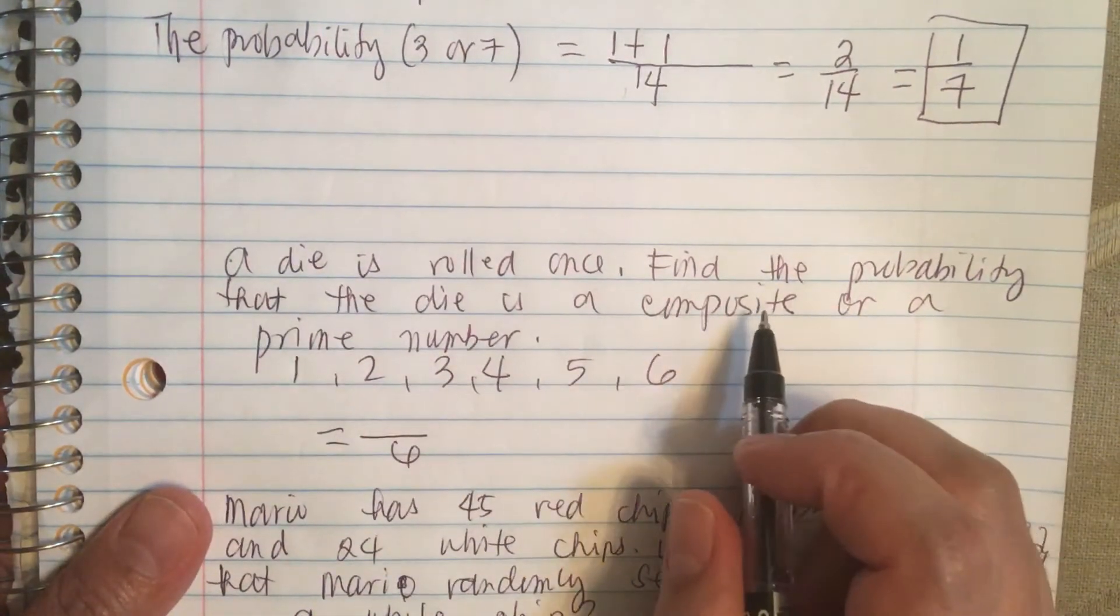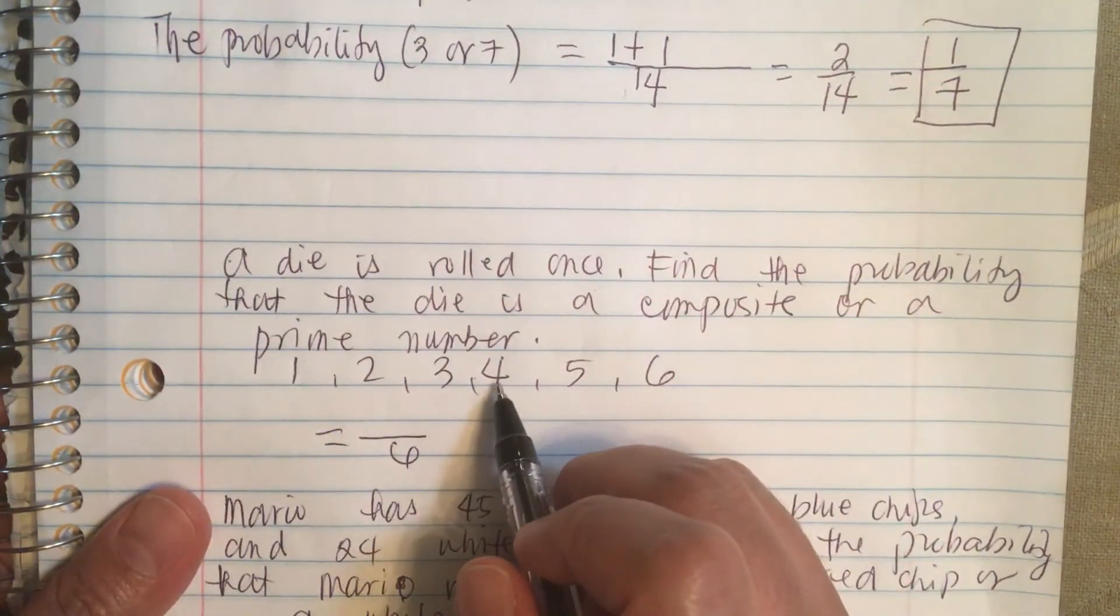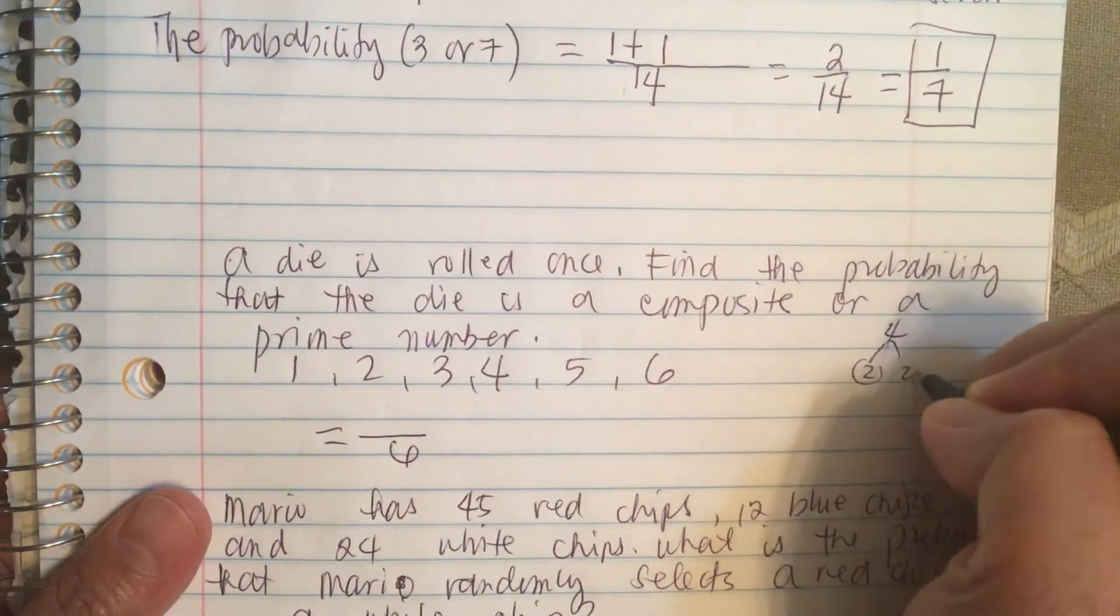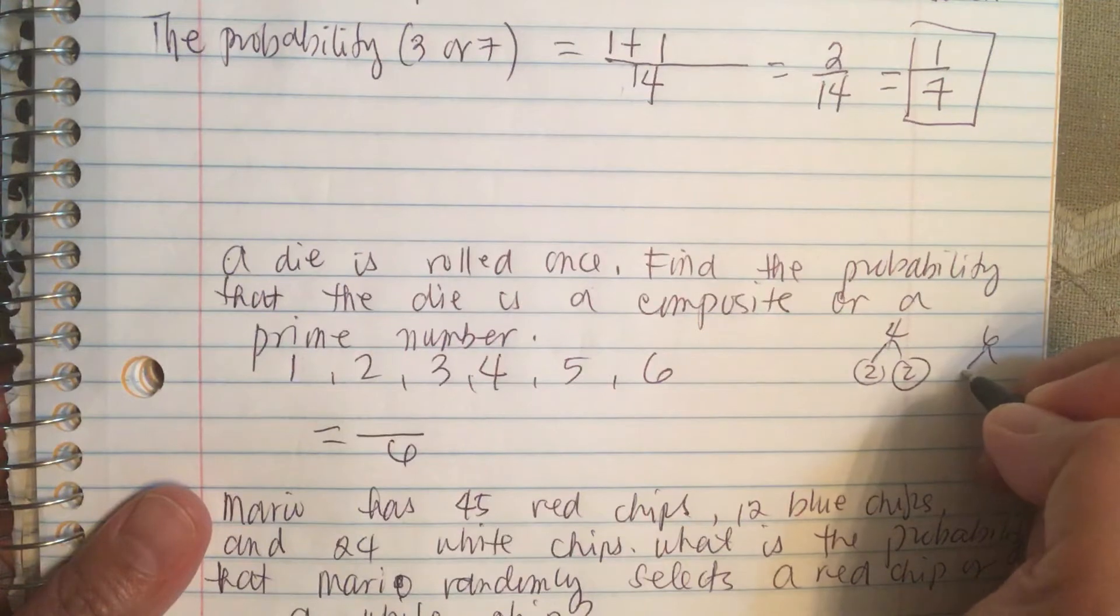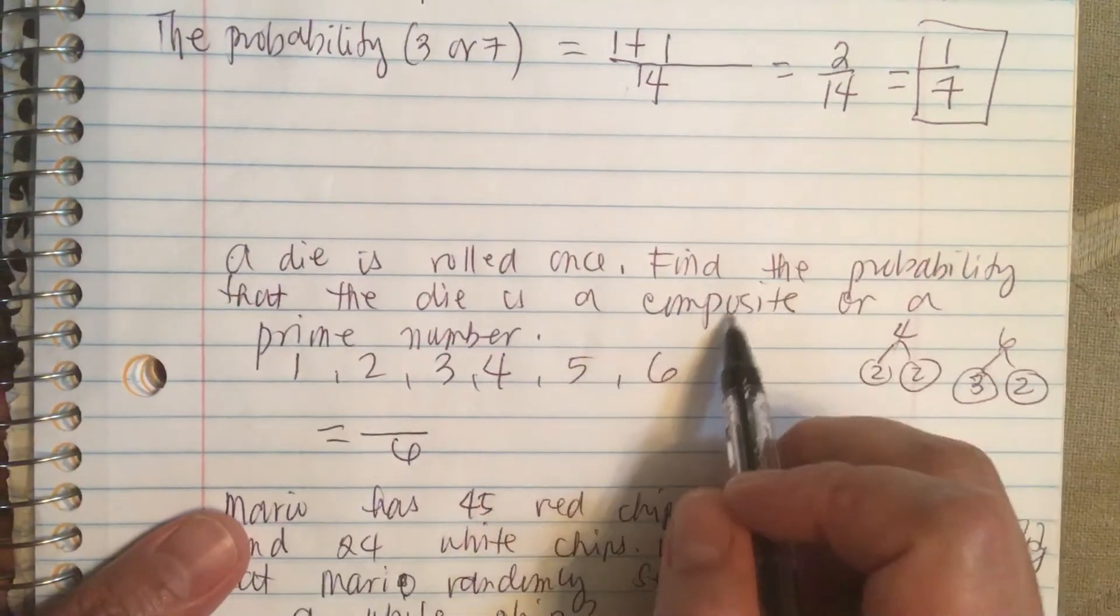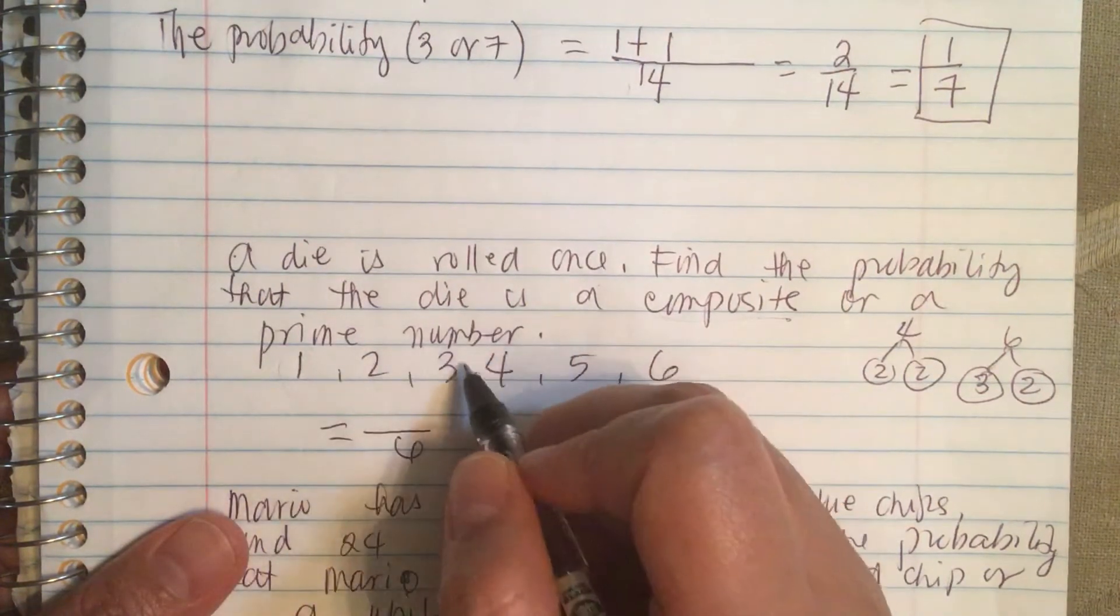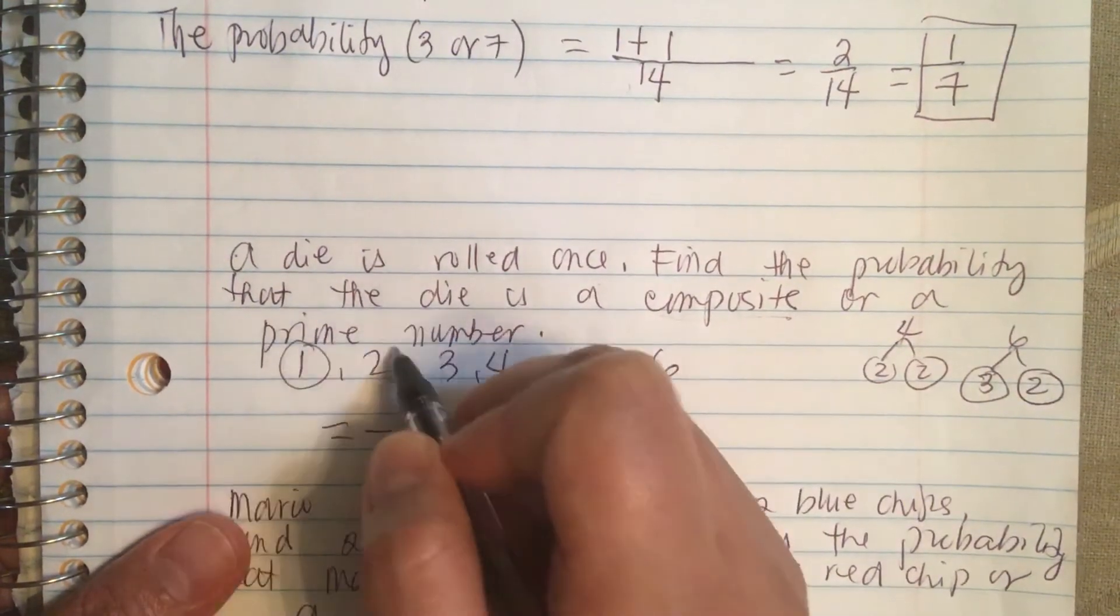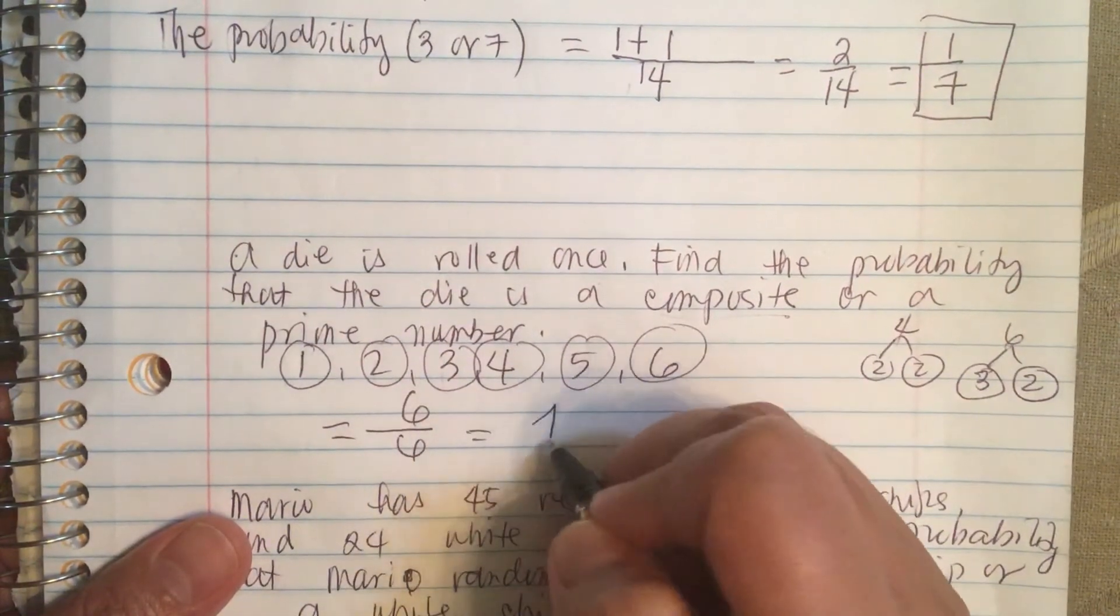A composite number means like four or six - it's composed of other numbers. Like four is composed of two and two, six can be decomposed into three and two. A prime number is one, two, three and five. So basically all of them: one, two, three, four, five, six. So it's six out of six or this is equal to one.